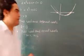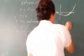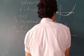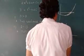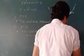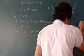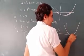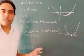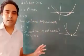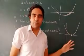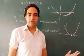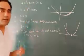Graphically, when D = 0, the parabola will touch the x-axis at exactly one point. For example, if the graph touches the x-axis at x = 3, then both roots will be x = 3 and x = 3 — the same point. The graph just touches, it does not cross.